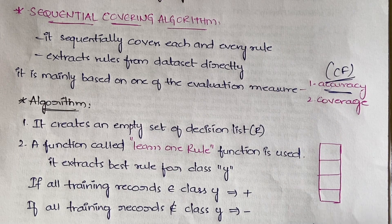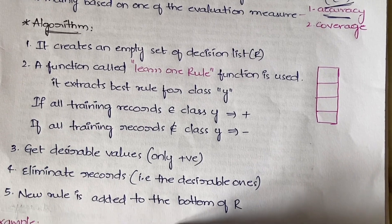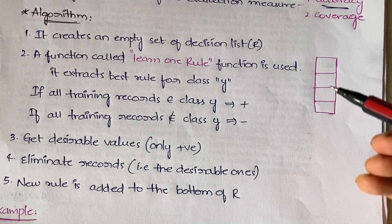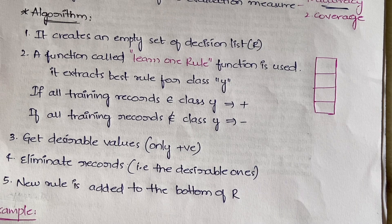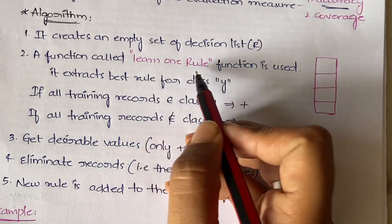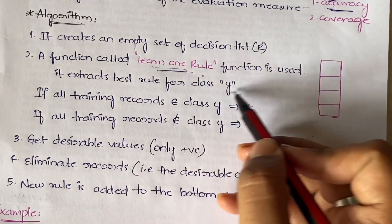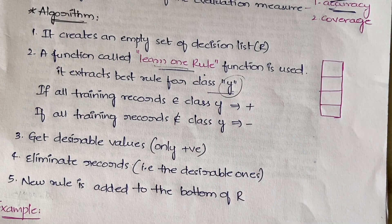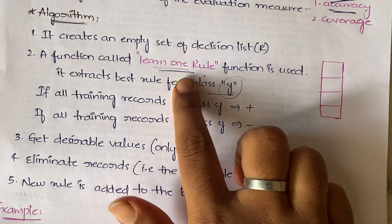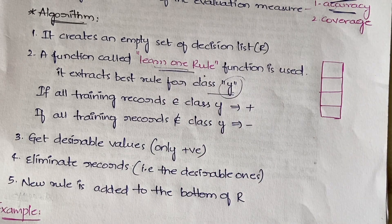Now let's see the step-by-step procedure. First, the algorithm creates an empty decision list — like a stack or queue. Then it uses a function called 'learn one rule,' which extracts the best rule for class Y — where class Y represents some category or classification group.